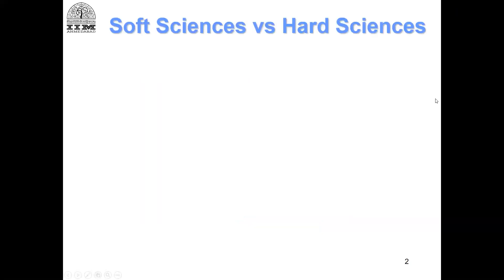There are two kinds of sciences, or broadly two streams of science. One we call as soft science, another we call as hard science. Hard science is something we studied in our schools — physics, chemistry, maths, biology. These are hard sciences. Why? Because the kind of constructs, the kind of variables that we talk about in hard sciences, they are very, very tangible.